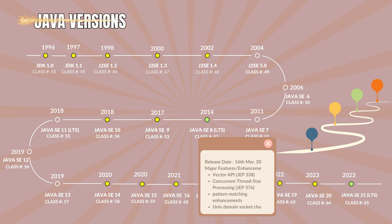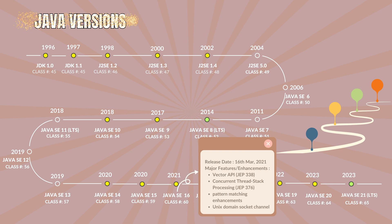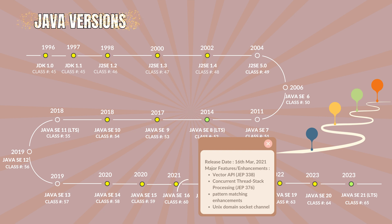Java 16.0 with the class file version 60. It was released on 16th March 2021. The major features and enhancements are Vector API JEP 338, concurrent thread-stack processing JEP 376, pattern matching enhancements as a standard feature, Unix domain socket channel, and improvements to the Foreign Function and Memory API incubator.